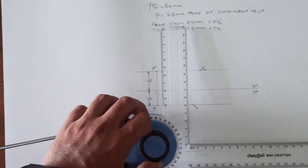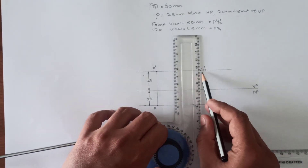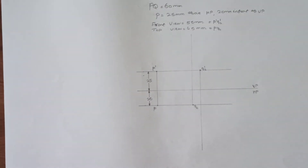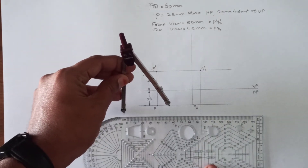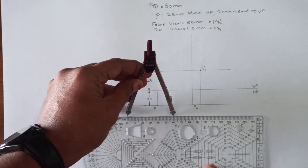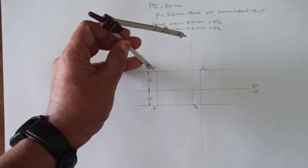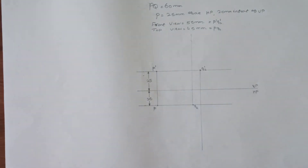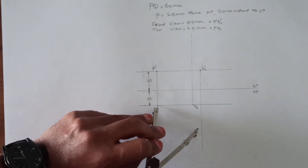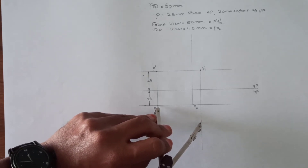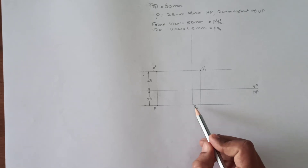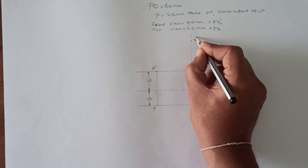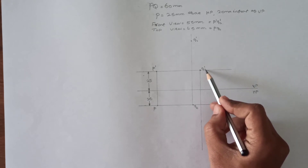From the points Q2' and Q1', draw a vertical projection. Since we don't have the opposite locus lines, this vertical projection can be of any length. The true length of the line is 60 mm, so take 60 mm in your compass as radius and with P' as center, draw an arc from the vertical projection of Q1'. Similarly, with 60 mm as radius and P' as center, draw an arc on the vertical projection of Q2'. The intersection on Q1's vertical projection is marked as Q1', and the intersection on Q2's vertical projection is marked as Q2'.